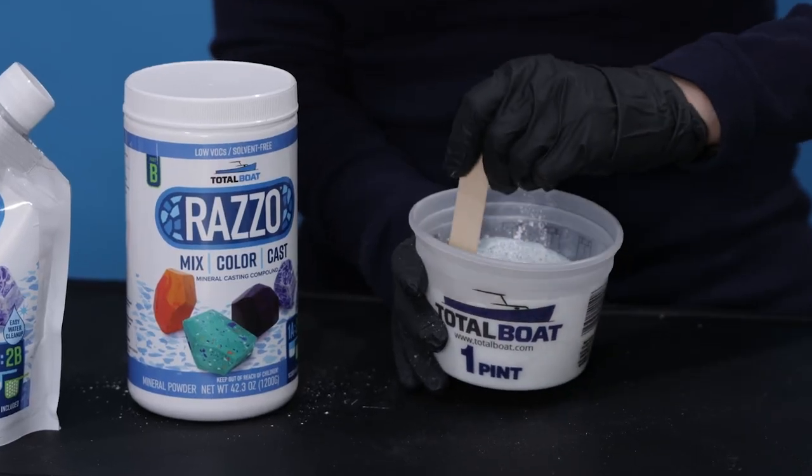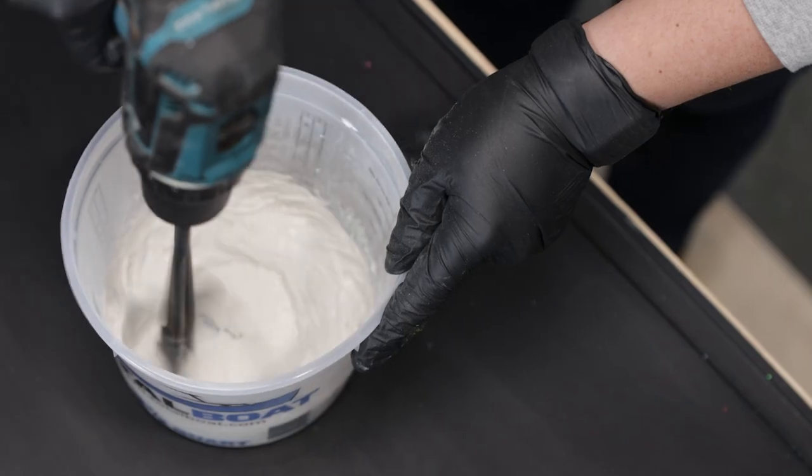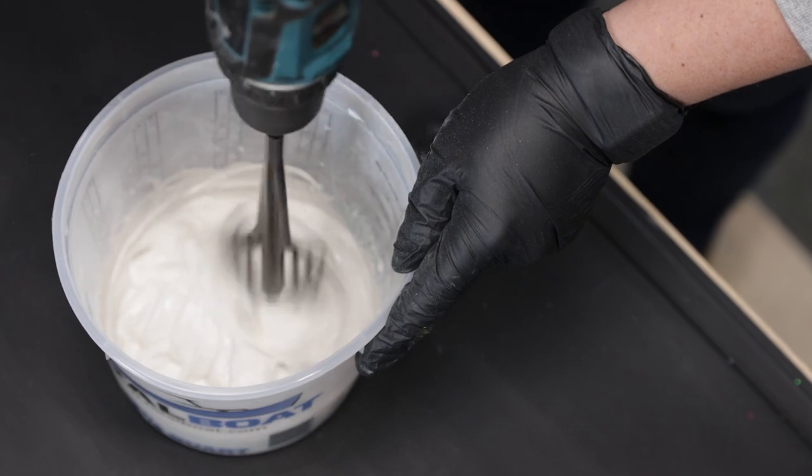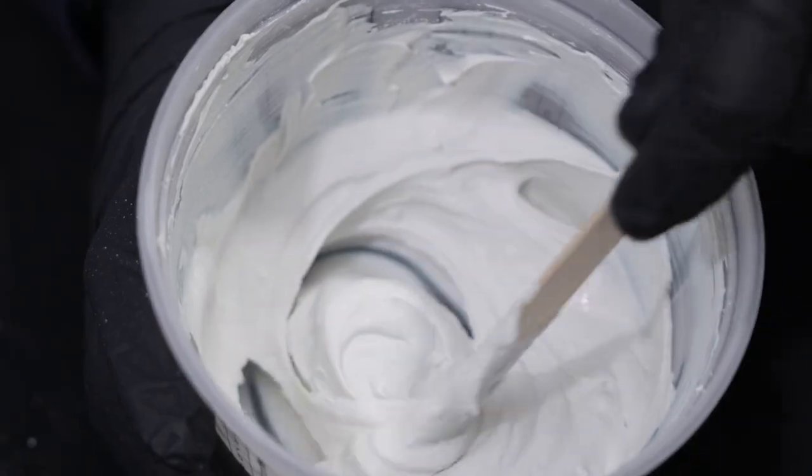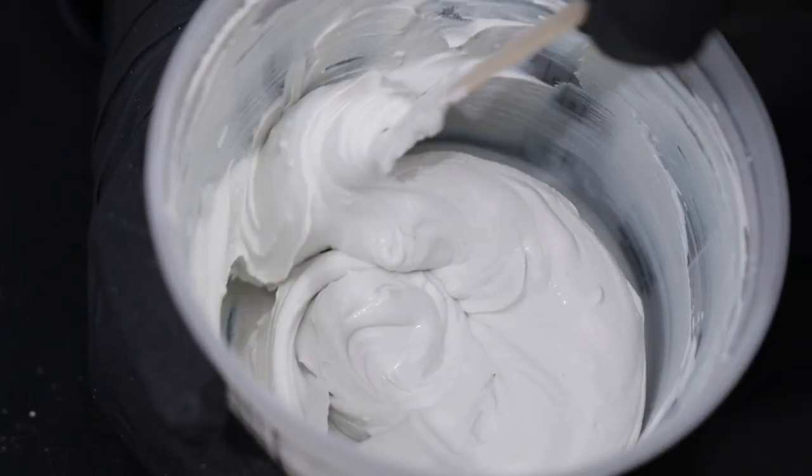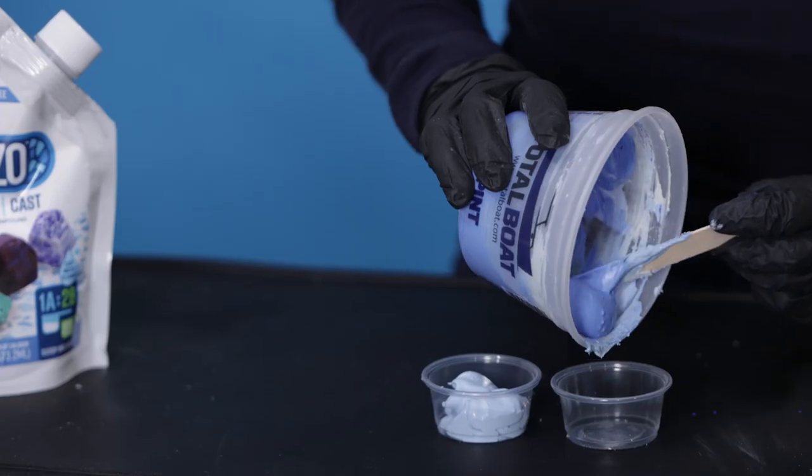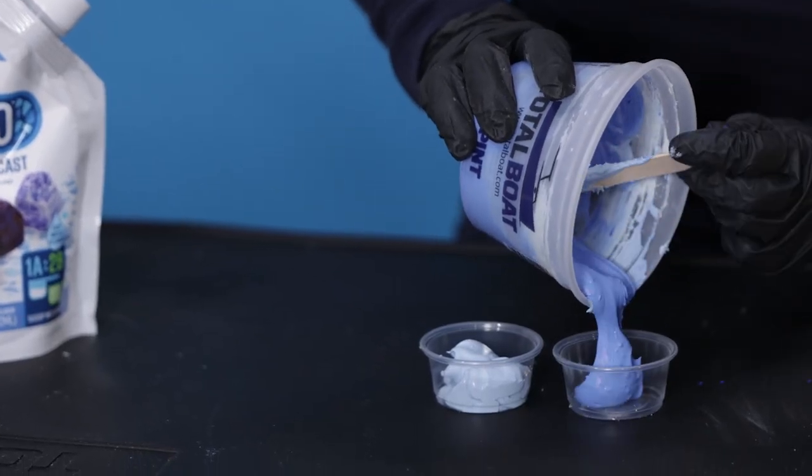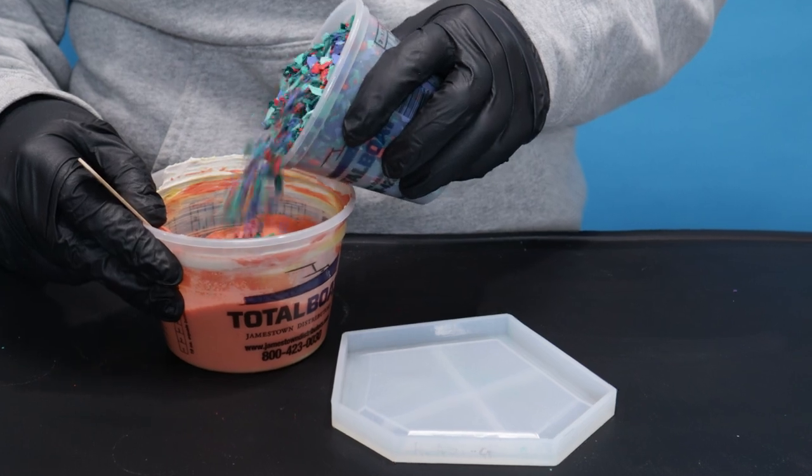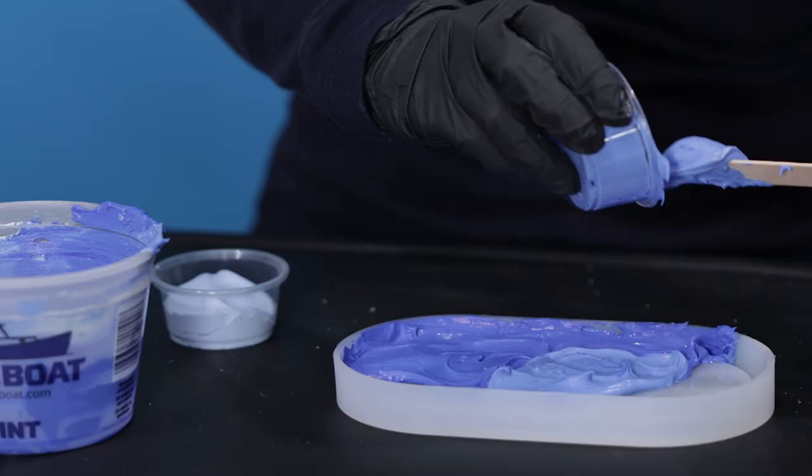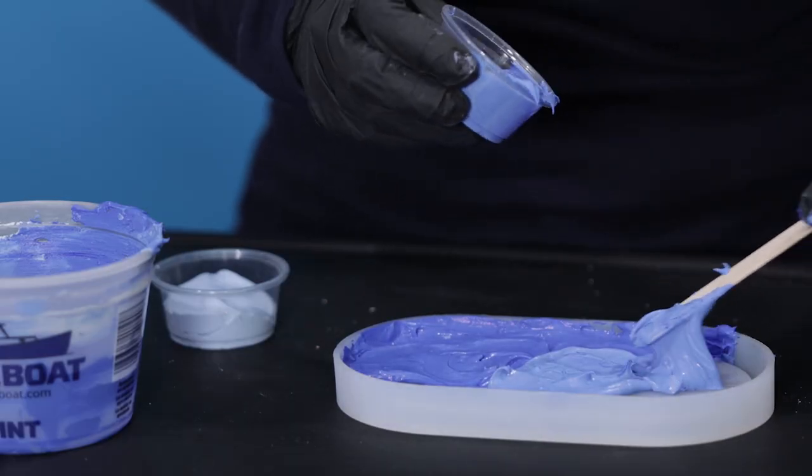Stir together with a mixing stick or use a paddle attachment on a drill for larger quantities. Once you've achieved a smooth consistency without lumps, you can color with pigments. You may want to separate into smaller quantities to color or add pre-made Razzo chips. Then pour into your mold and let it cure.